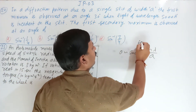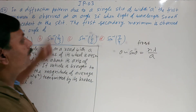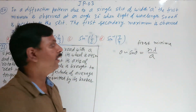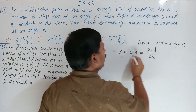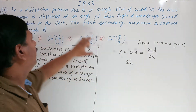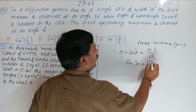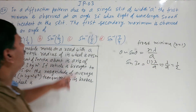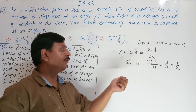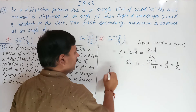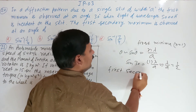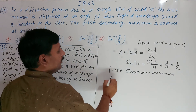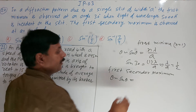For the first minima, n equals 1, so sin(theta) equals lambda / A. They have given theta equals 30 degrees, so lambda / A equals sin(30°) equals 1/2. Now for the first secondary maxima, it forms at sin(theta) equals 3/2 times lambda / A.